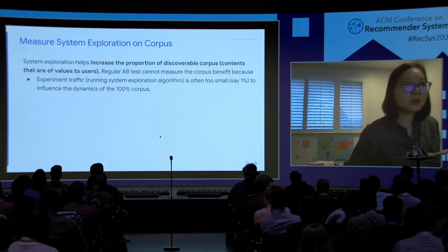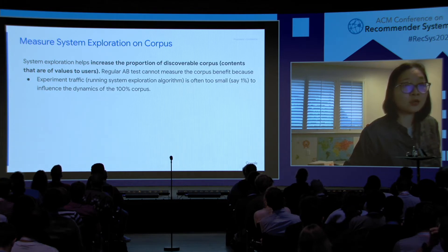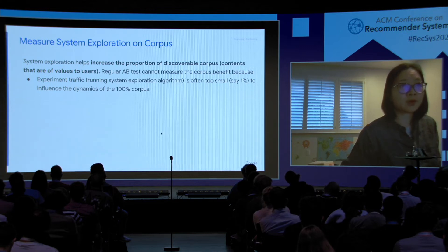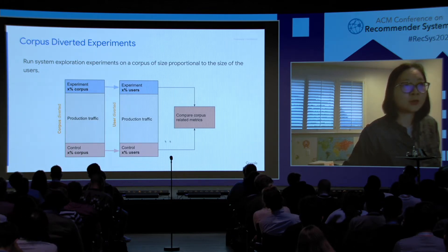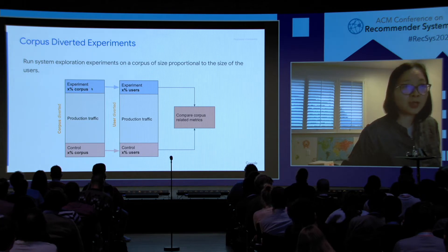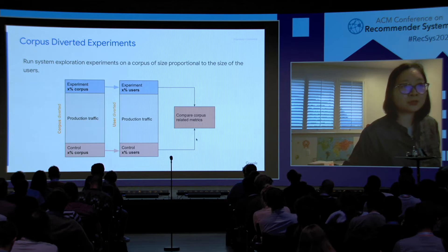Similarly, system exploration can help increase the proportion of discoverable corpus — content that will be of value to users. A regular A/B test cannot measure this corpus benefit because experiment traffic running the exploration algorithm is often too small, say 1%, to really influence the dynamics of the full corpus. We propose a user and corpus joint-diverted experiment, where in the experiment group, X percent of users is only in charge of exploring X percent of the corpus. We then compare the two groups on corpus-related metrics to measure the effect of system exploration in increasing the discoverable corpus.